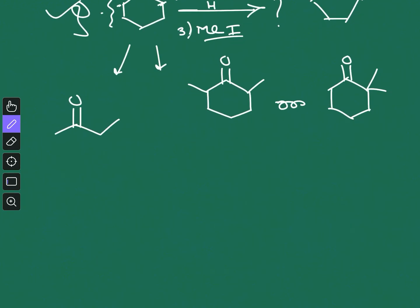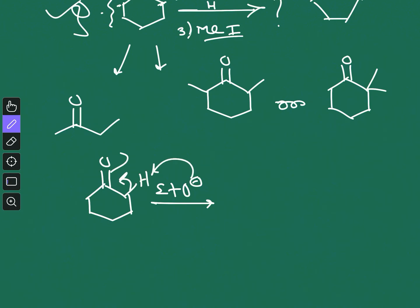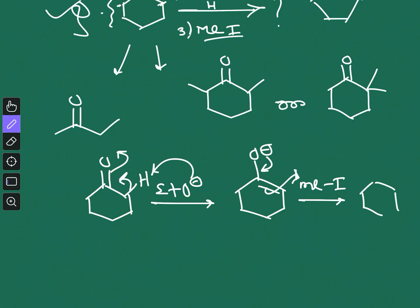Let us first proceed with the question we have picked. This is our given ketone. In the first step, if it is treated with sodium ethoxide, it will take a proton from here and form the enolate. We get this enolate — this step is straightforward. Methylation will occur on this enolate, and we will have this unsymmetrical ketone. Basically, the first step is the formation of an unsymmetrical ketone.